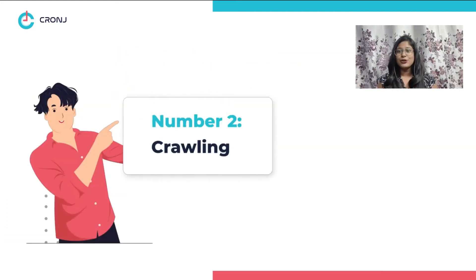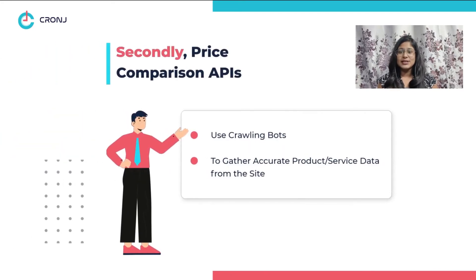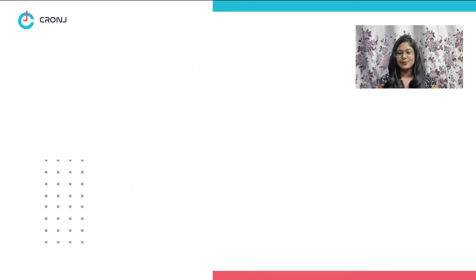Number two: crawling. Secondly, the API uses crawling bots that frequently gather accurate data of products or services available on the retailer site for further processing.